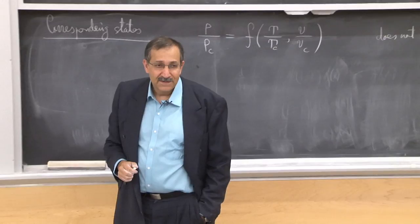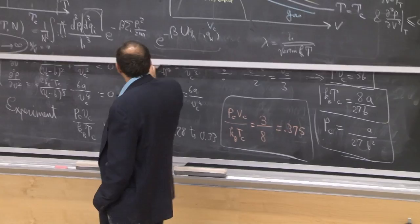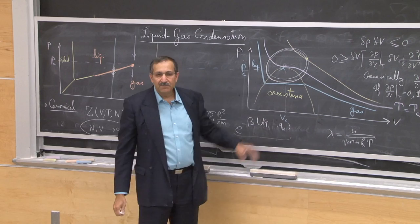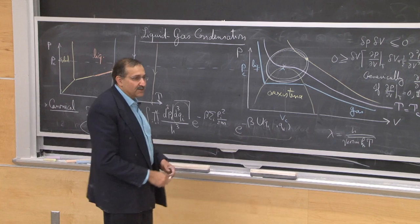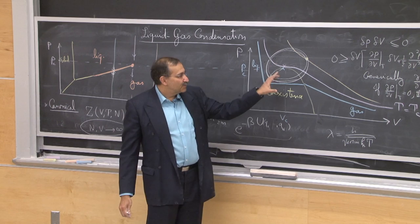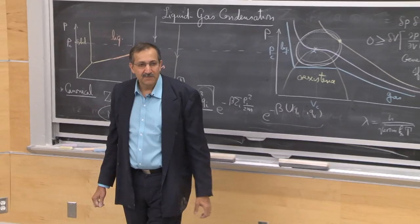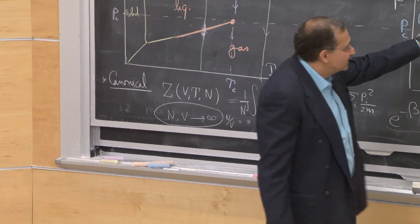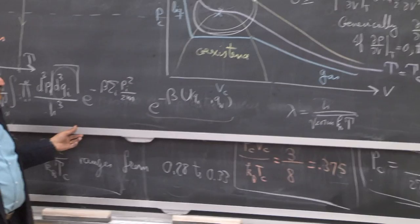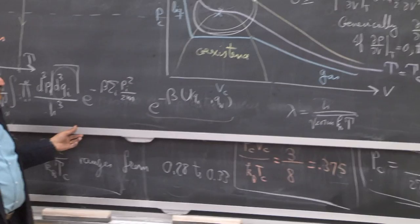Surprisingly, however, in the vicinity of the critical point it does work. For a huge number of different gases — krypton, argon, carbon dioxide, mixtures — if you appropriately rescale pressure, temperature, and density by their critical values, all the data collapse onto exactly the same curve near the critical point. There is universality, just not over the entire phase diagram, but specifically near the critical point.